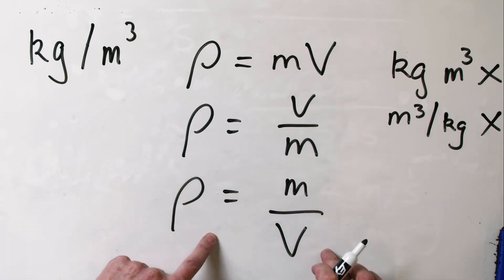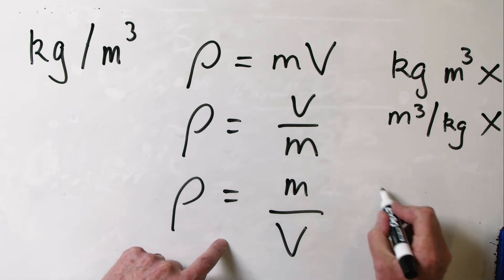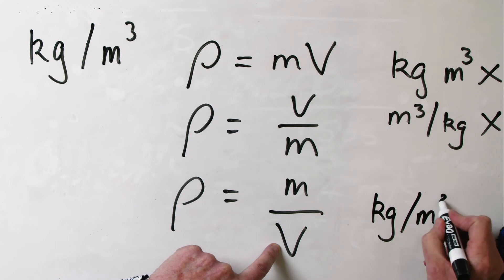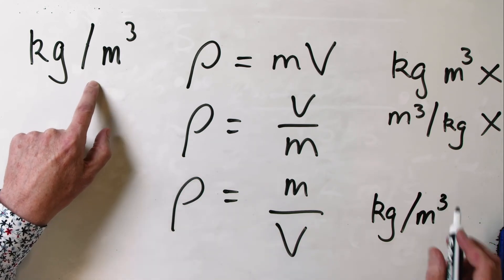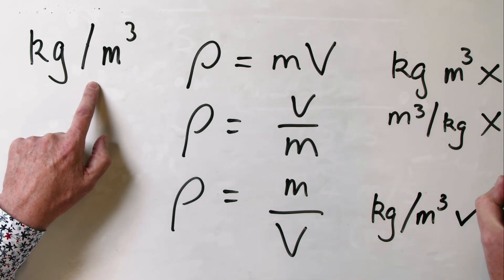By process of elimination, this must be the right one. Let's see. We've got units of mass, which is kilogram, units of volume, which is cubic metre, which is the units that we want. So therefore, this has to be the right way round.